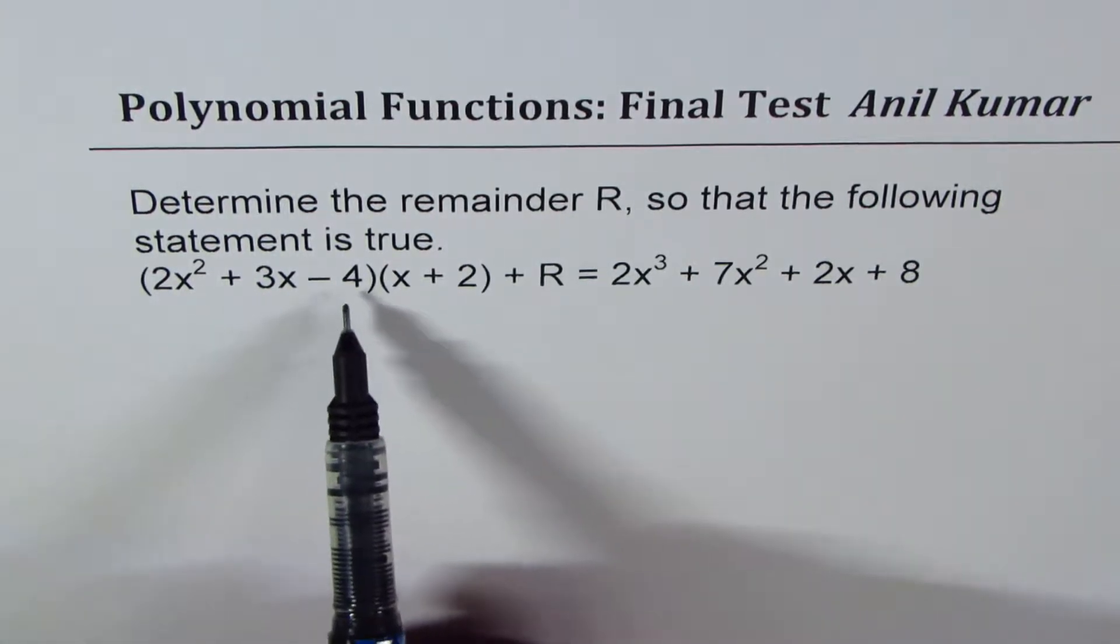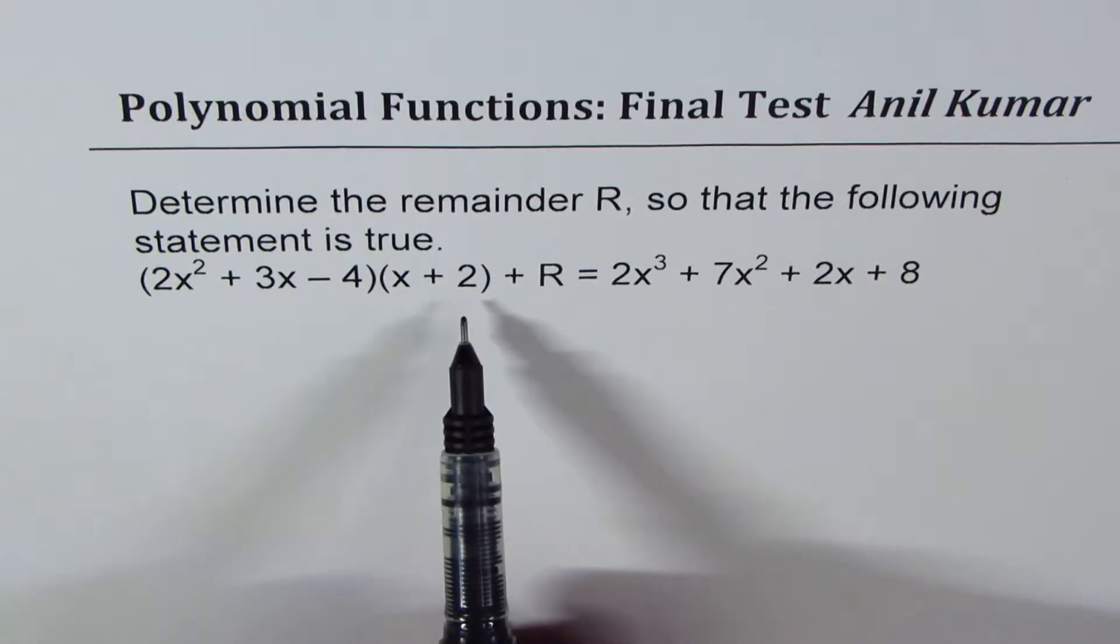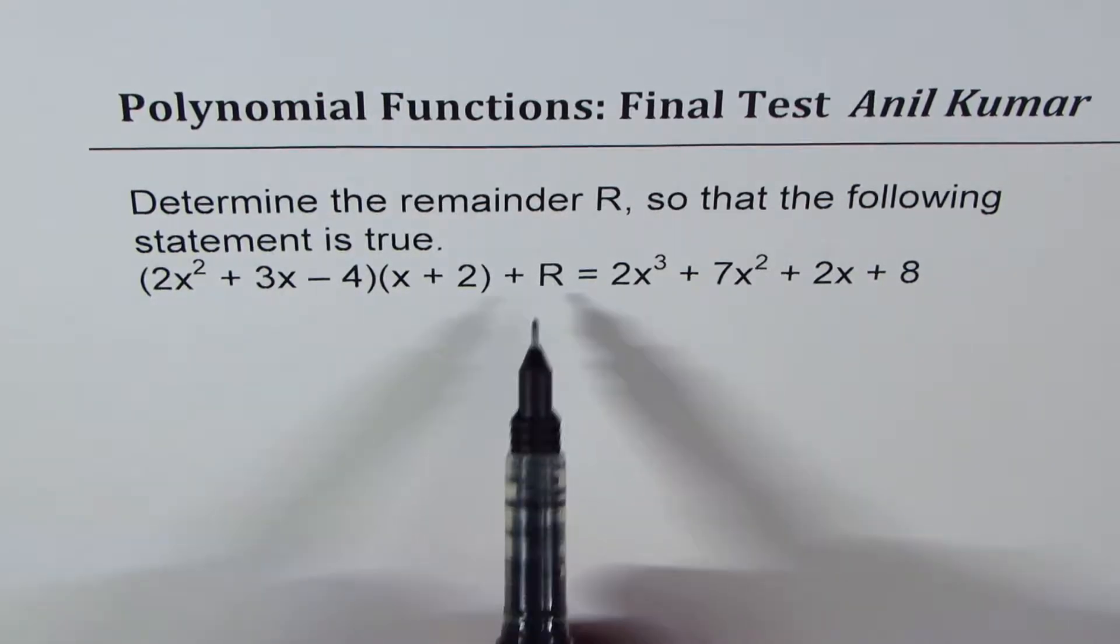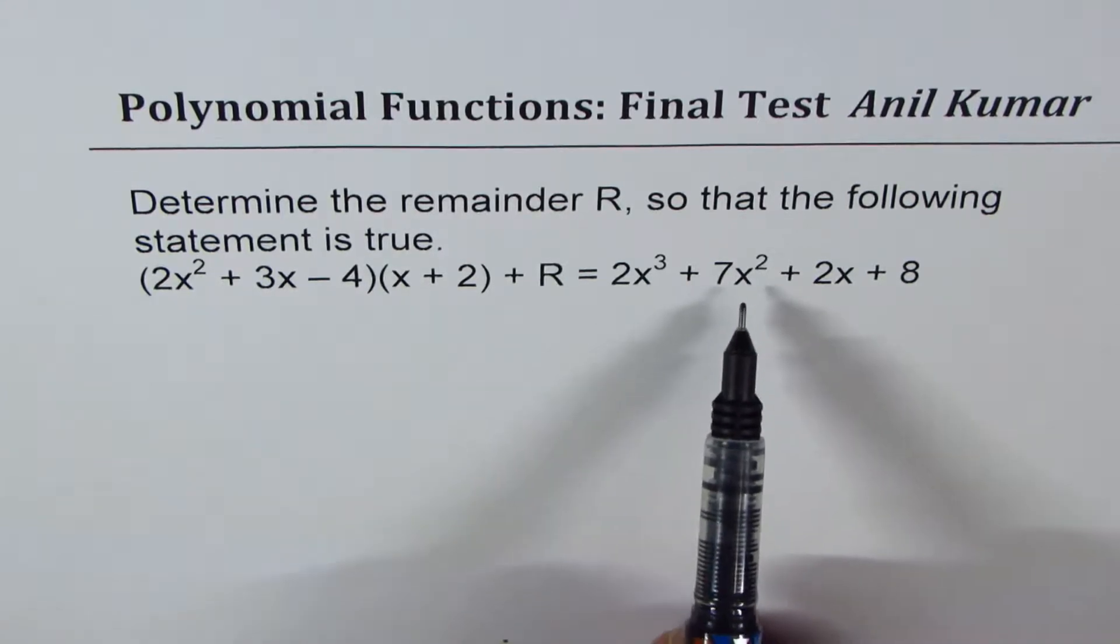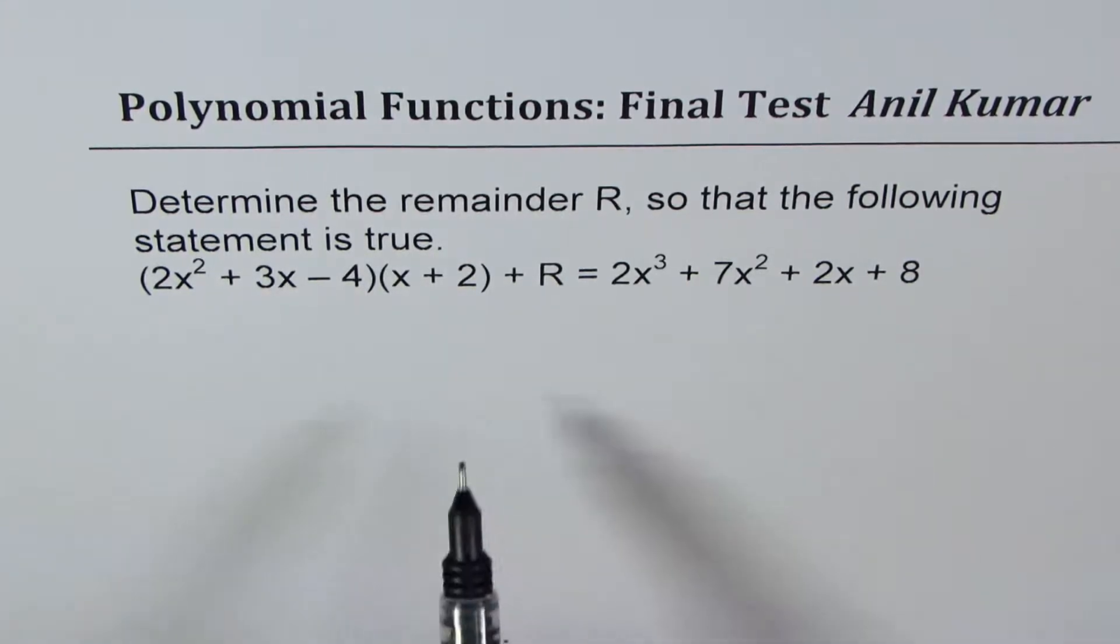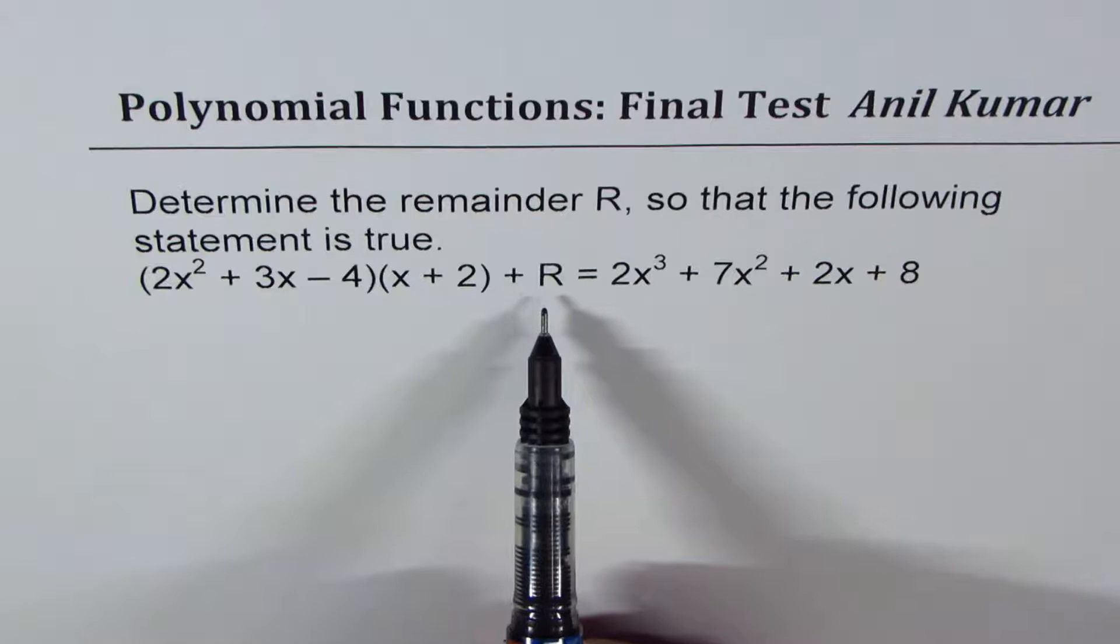2x squared plus 3x minus 4 times x plus 2 plus R, the remainder, equals 2x cubed plus 7x squared plus 2x plus 8. You need to find the value of R.